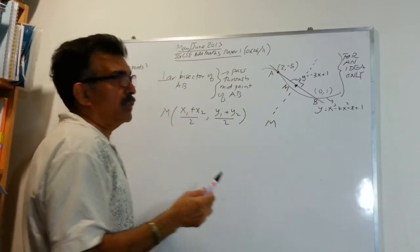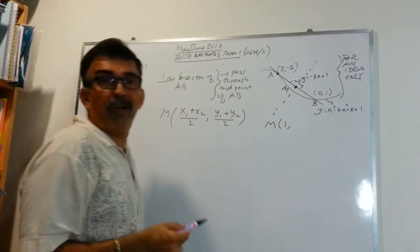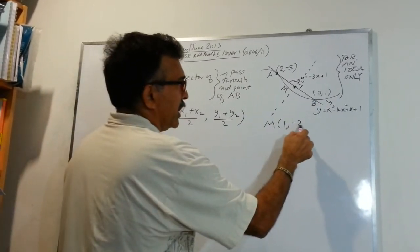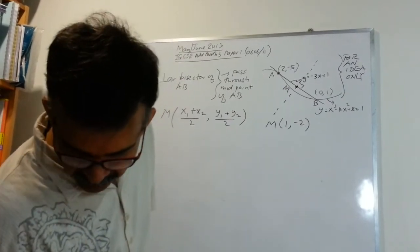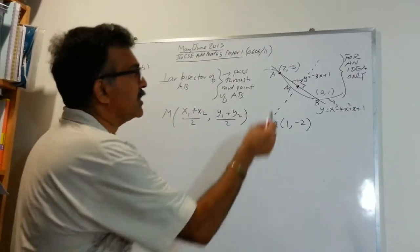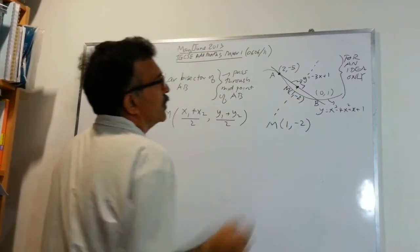2 plus 0 divided by 2 is 1. And minus 5 plus 1 is minus 4, divided by 2 is minus 2. So, we have the midpoint of M, 1 negative 2. Let's write it down here. Let's make some space. This will be 1 negative 2.